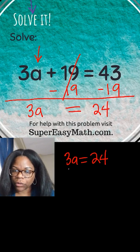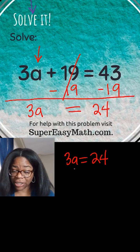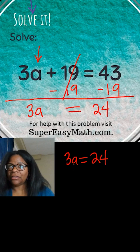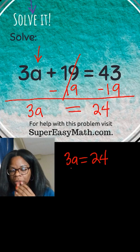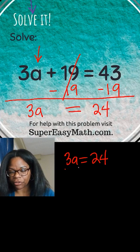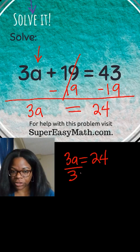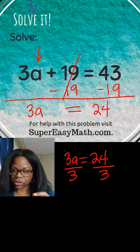Now I have a 3 and an a. I need to get rid of that 3 because my goal is to get the a by itself. The way the 3 and a are connected right now is multiplication. The opposite of multiplication is division, and I want to divide by 3. And remember, whatever you do on one side you have to do on the other side also, so you have to divide by 3 over here as well.